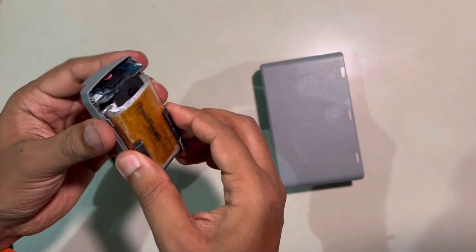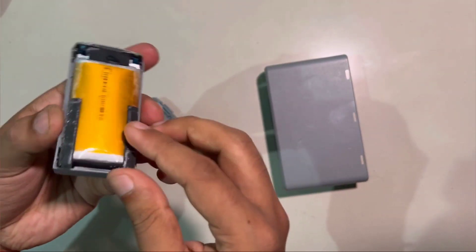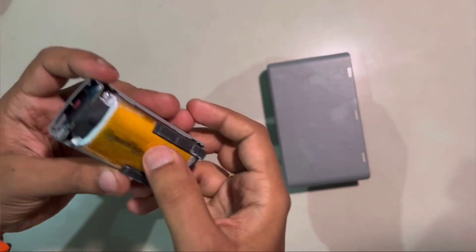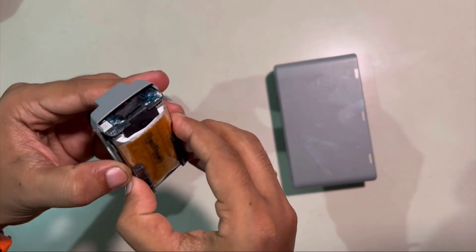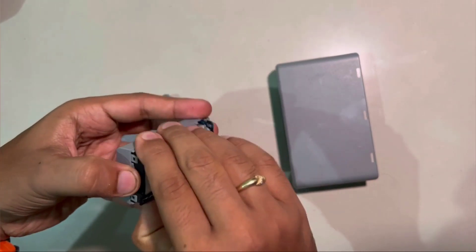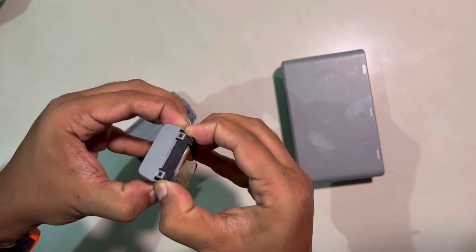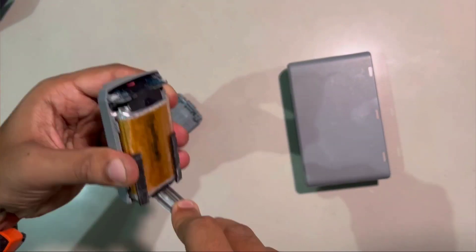Do not use any sharp material to open the battery case because it's very dangerous. Make sure you're not performing this in your bedroom or hall where a lot of things are present. Ensure you're doing this in an open space and handle it carefully because if you do anything wrong, there's a high chance the battery might catch fire.